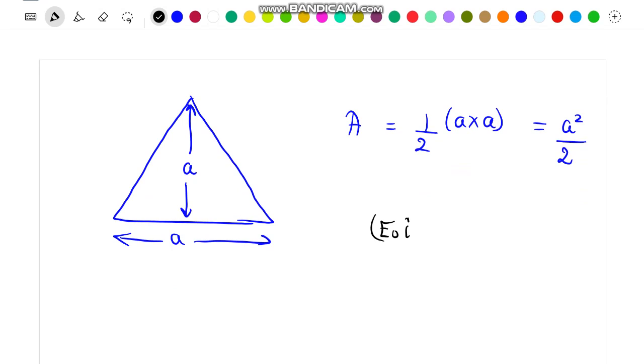So we can write the flux passing through this triangular region will be equal to E0 into A, which is equal to E0 into A square by 2, which is our final desired result. Thank you.